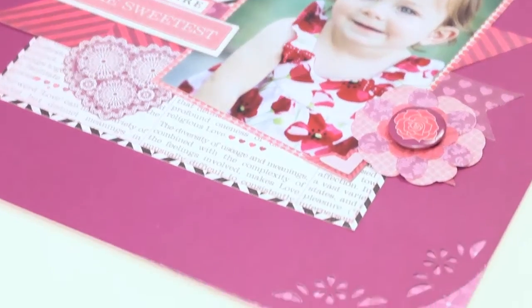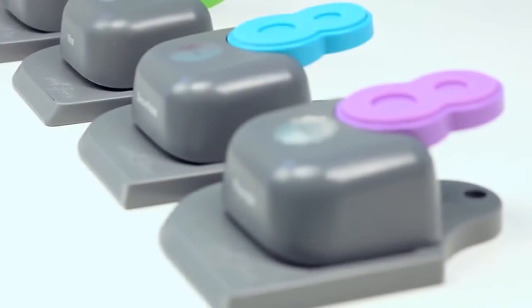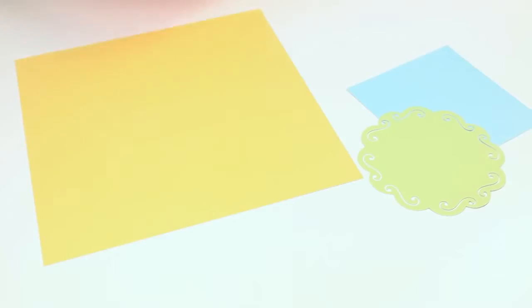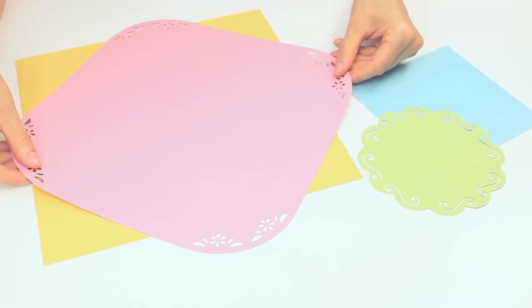The Mini 8 Punch is an edge-to-edge punch so you can take larger pieces of paper and create decorative corners and edges just like this.